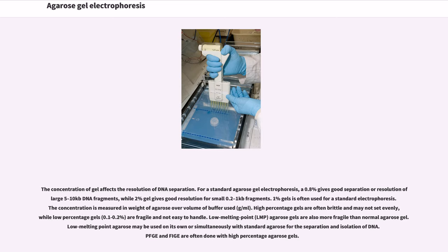The concentration of gel affects the resolution of DNA separation. For a standard agarose gel electrophoresis, 0.8% gives good separation of large 5–10 kilobase DNA fragments, while 2% gel gives good resolution for small 0.2–1 kilobase fragments. 1% gels are often used for standard electrophoresis. The concentration is measured in weight of agarose over volume of buffer used (g/mL). High percentage gels are often brittle and may not set evenly, while low percentage gels of 0.1–0.2% are fragile and not easy to handle. Low melting point (LMP) agarose gels are also more fragile than normal agarose gel, but may be used on their own or simultaneously with standard agarose for separation and isolation of DNA.